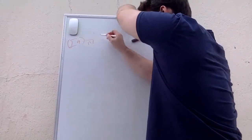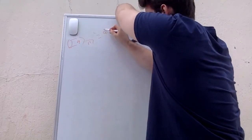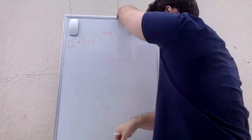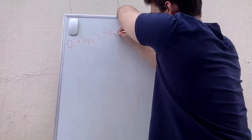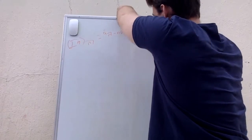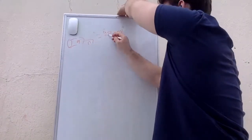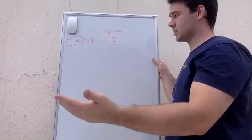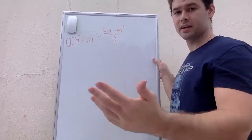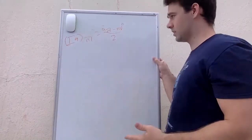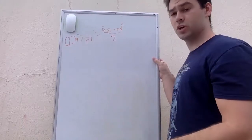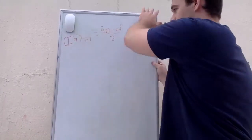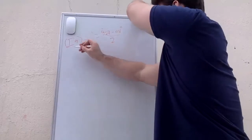Some other important formulas are the increasing annuity: (Ia)-angle-n equals (a-double-dot-angle-n − n·v^n) / i. Remember, to go from annuity immediate to annuity due you multiply by (1 + i), and that's how you move between the two.